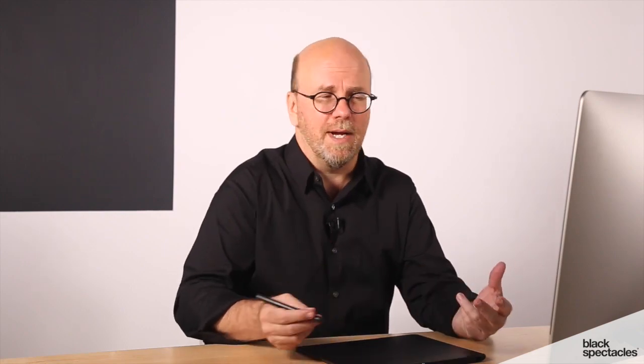When we start talking about movement areas around doors and the ability to get into a room and turn around, there's the ubiquitous 5-foot circle. You're probably all used to the idea of drawing a 5-foot circle onto a plan so that you can see that somebody could, if they went into that space, do a turnaround — a 180-degree turn — and then get back out.